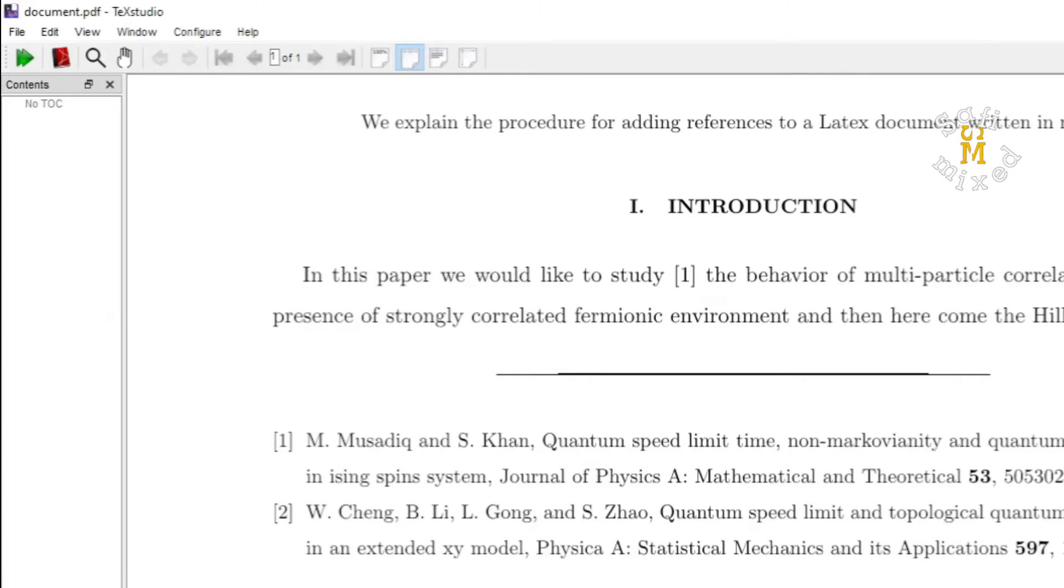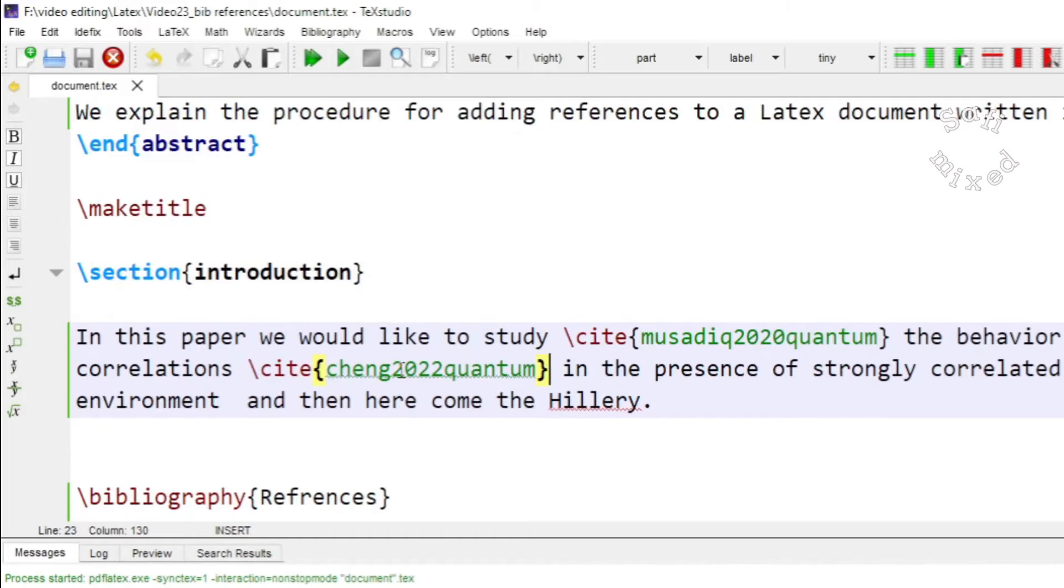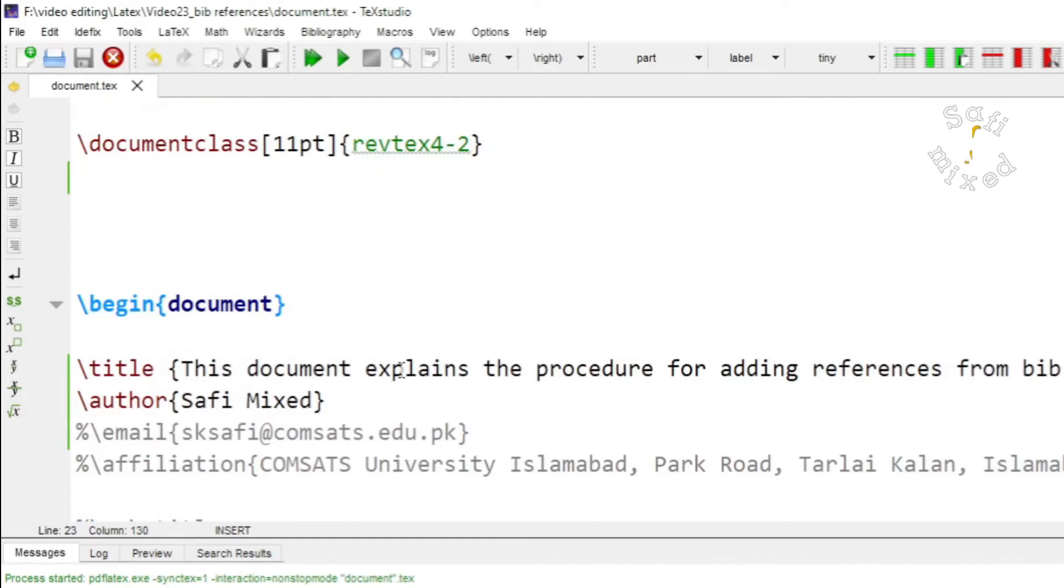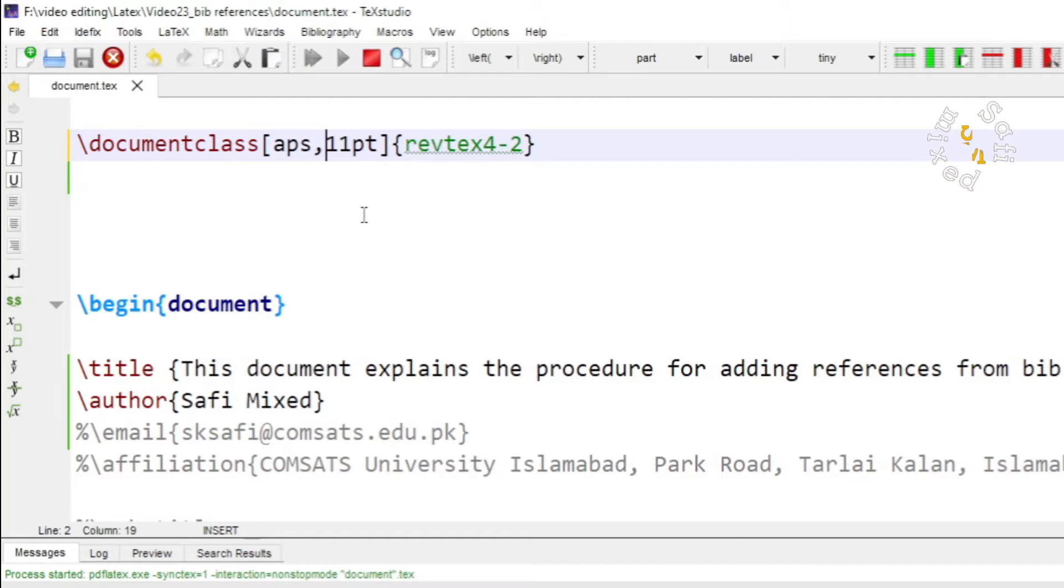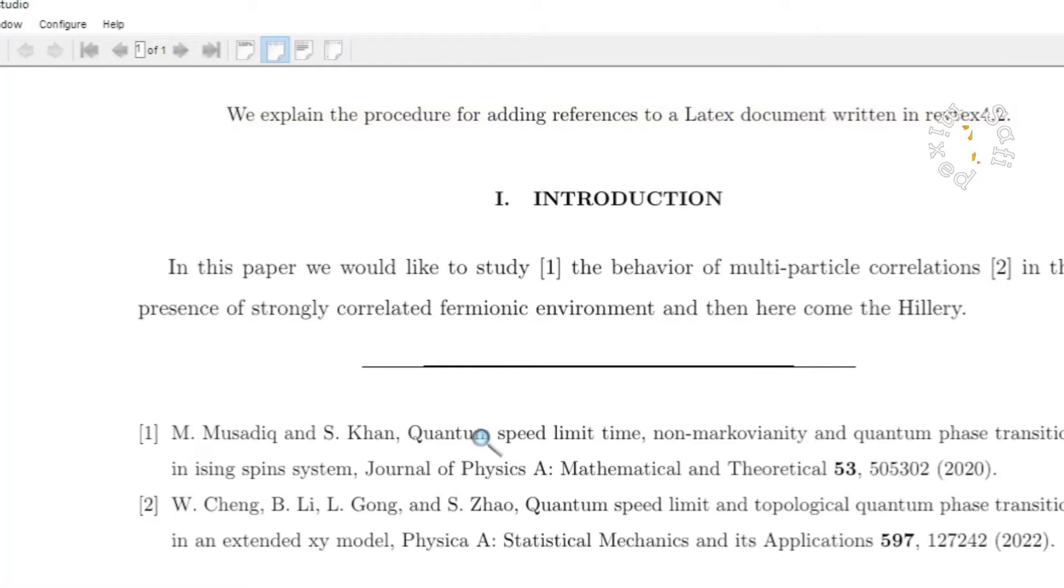Now I want to add different styles to the citation and I can do that by adding additional information into the optional argument of document class. Let me add APS. If I add APS it would put the references in APS style.